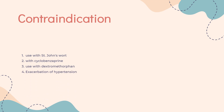Contraindications. Rasagiline tablets are contraindicated for use with St. John's Wort and with cyclobenzaprine. Rasagiline tablets are also contraindicated for use with dextromethorphan because of the risk of an episode of psychosis or bizarre behavior. Additionally, exacerbation of hypertension may occur during treatment with rasagiline tablets.